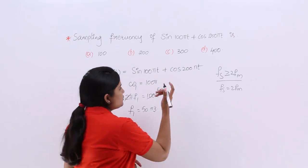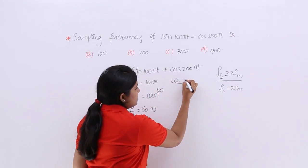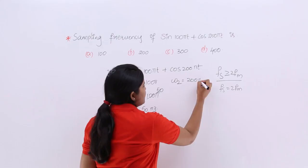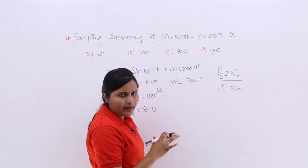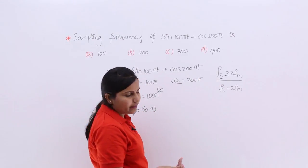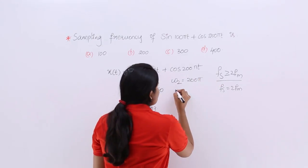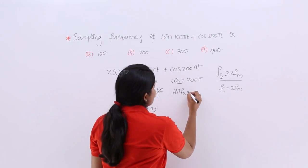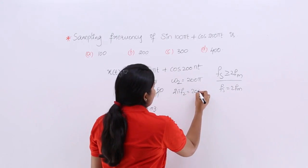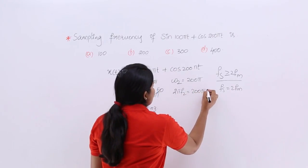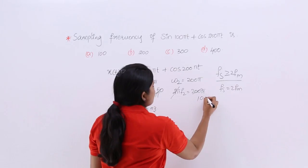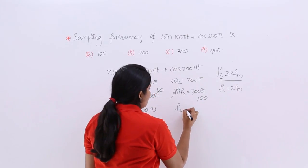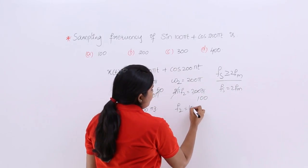Coming to the second frequency component, I am considering ω2 by comparing with cos(ωt). So 2πf2 = 200π, which gives f2 = 100 Hz.